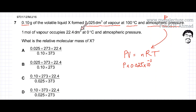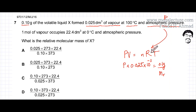Continuing with the ideal gas equation: n, the number of moles, equals mass (0.1 grams) divided by Mr, which is unknown. R is the gas constant, 8.31, and temperature must be in Kelvin — 100 degrees centigrade plus 273 gives 373 Kelvin.